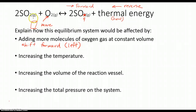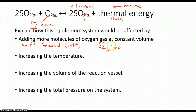What would happen if you have more SO4? Then using the balance analogy, you would have more molecules on the product side. The balance shifts so that more reactants are made — so adding more SO4 shifts the equilibrium to the left, toward the reactant side.